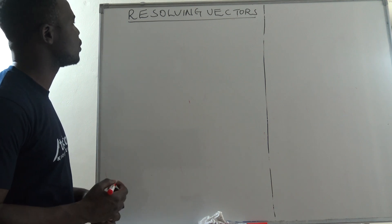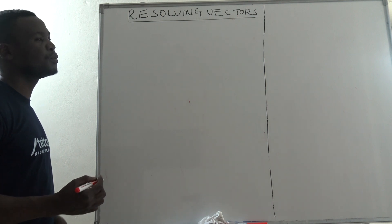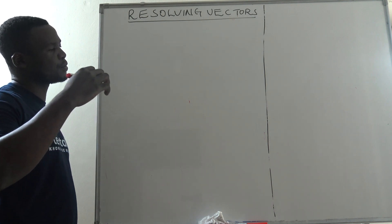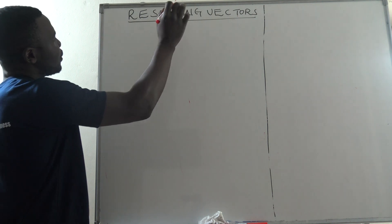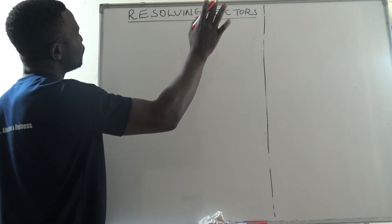Now we are basically going to resolve vectors in two directions or in two dimensions, and before we go to the deriving, what comes out of resolving?